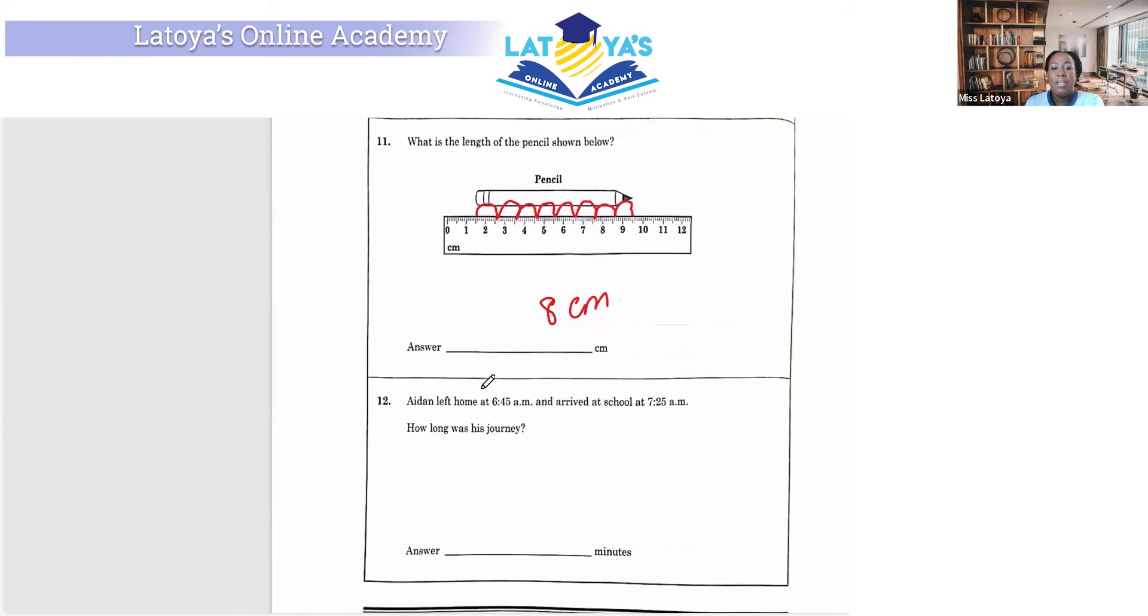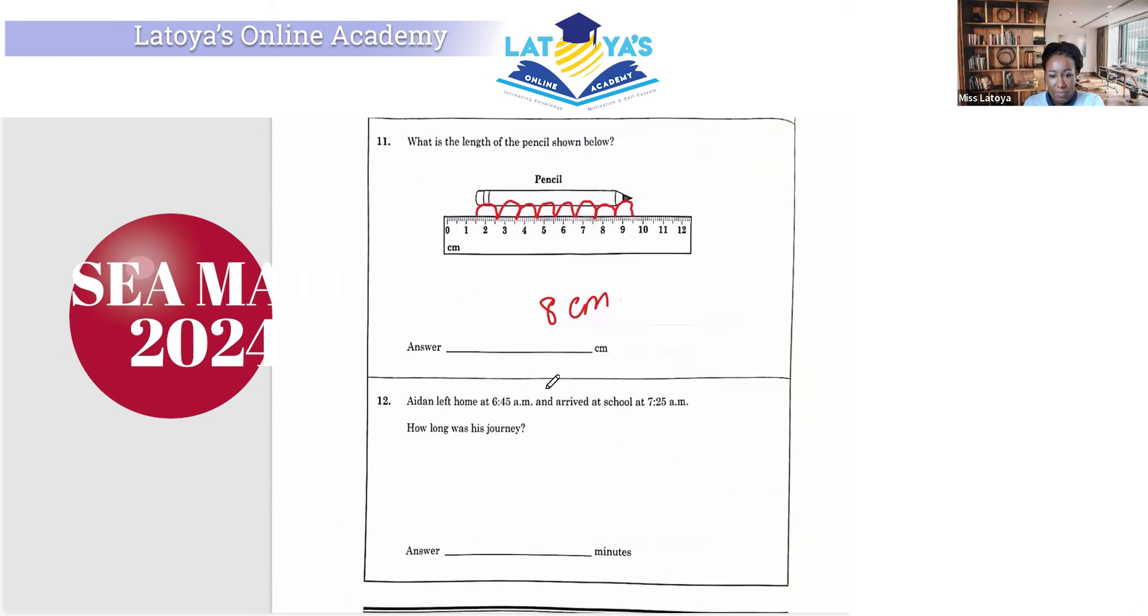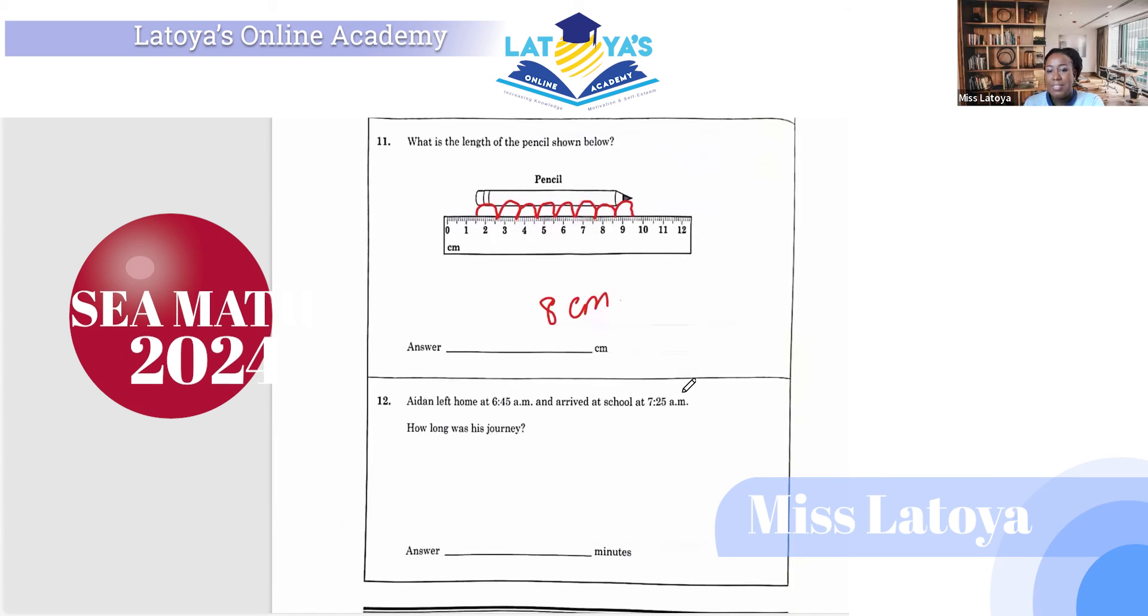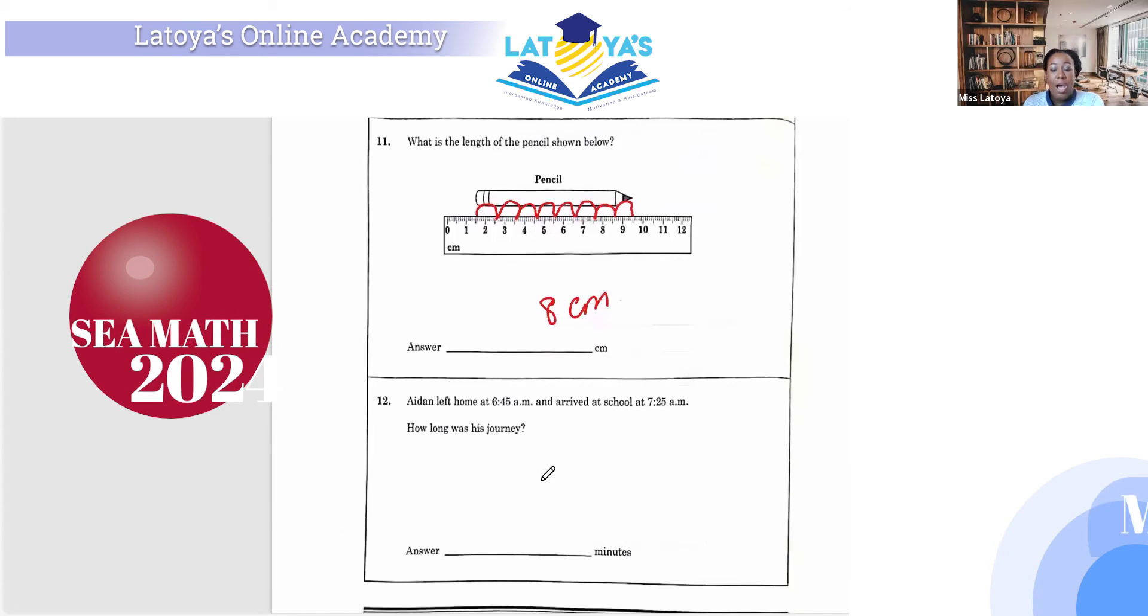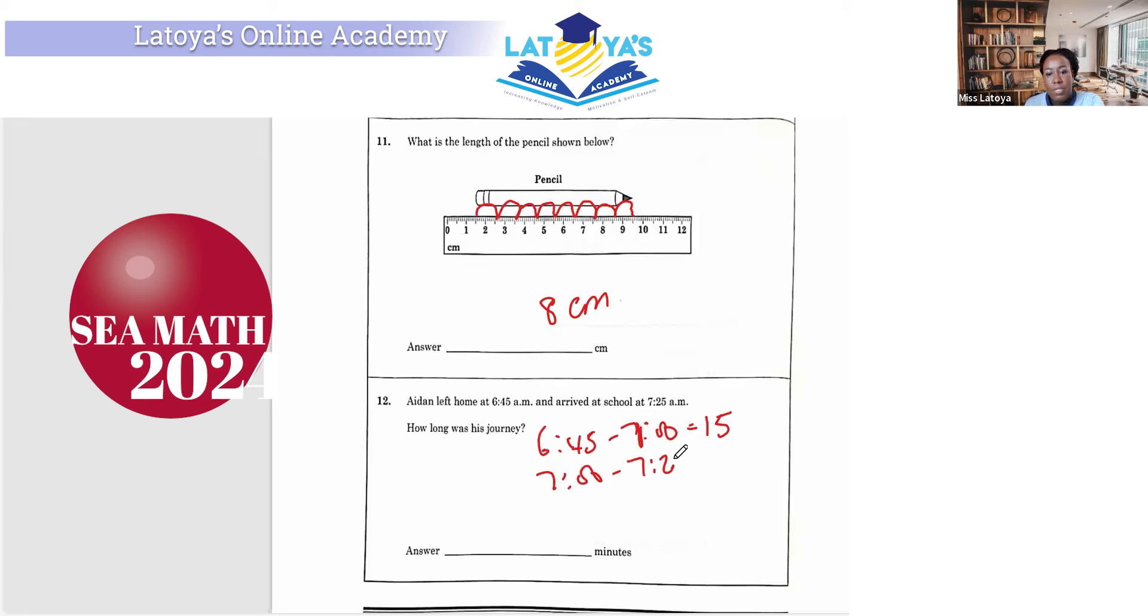Question 12. Aidan left home at 6:45 a.m. and arrived at school at 7:25 a.m. How long was his journey? So some students may be good at time and some may not be good with time. So I'm going to show you all two ways you can approach this. So you can say from 6:45 to 7 is 15 minutes. And then from 7 to 7:25, that is 25 minutes. So if you add 15 and 25, you're going to get 40 minutes.